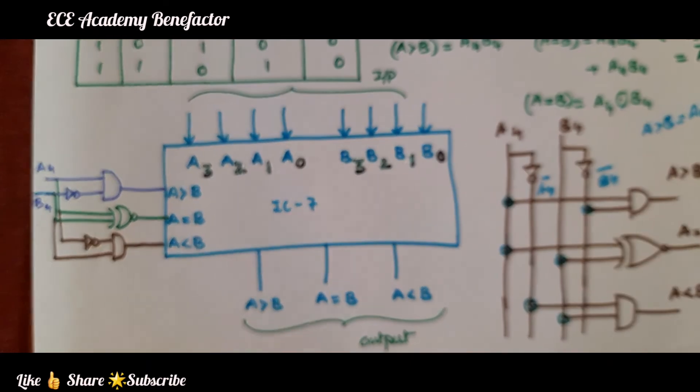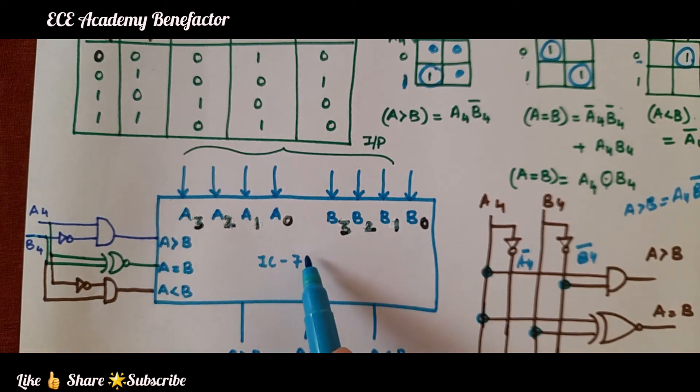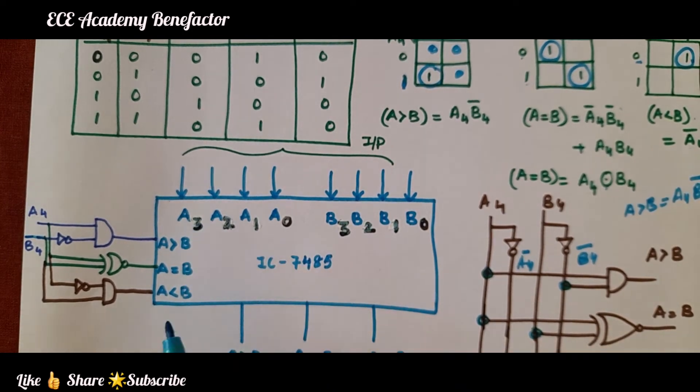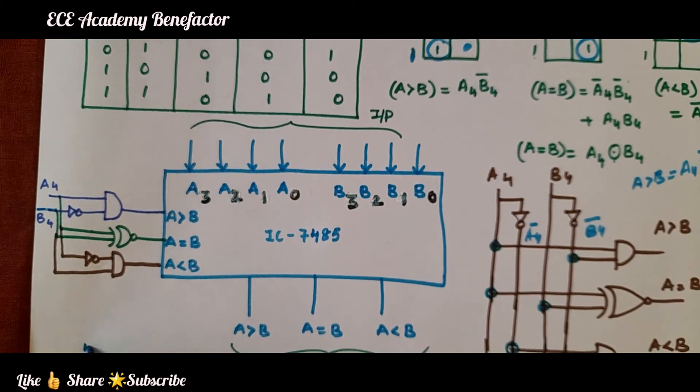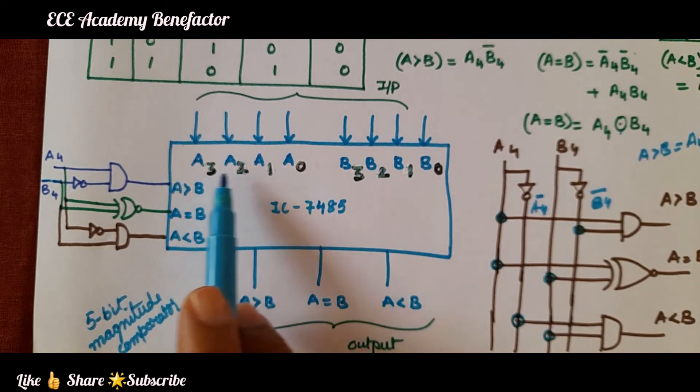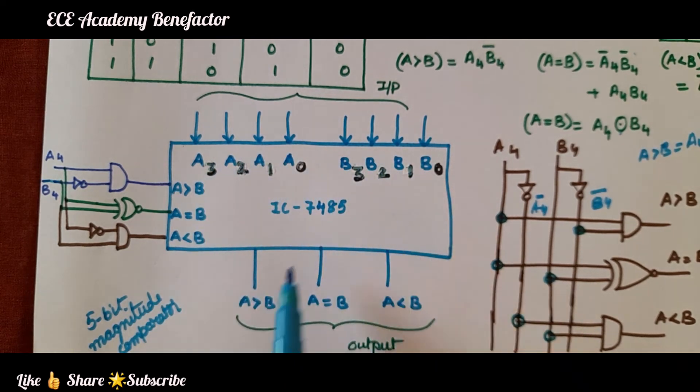Now what we need to do? We will draw the IC diagram. What is IC diagram number? IC 7485, outer structure we will draw. We are designing a 5-bit magnitude comparator. What is this 7485? It is a 4-bit. We have taken 4 bits here: A3, A2, A1, A0, B3, B2, B1, B0. And the outputs are A greater than B, A equal to B, and A less than B.